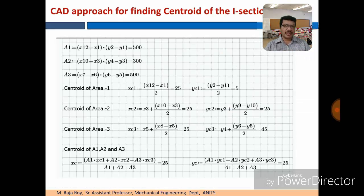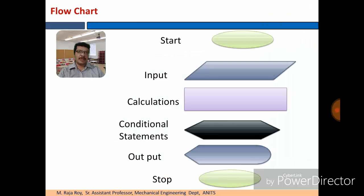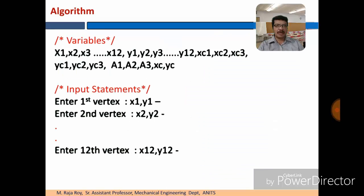You can get the overall centroid as shown here. In CAD approach for design problems, the first step is the standard design procedure. Second step is drawing flowchart. To draw the flowchart, these are the various symbols we have to use. Start symbol is an elliptical oval shape. Parallelogram represents the input statements. Rectangle for calculations and conditional statements and output statements are as shown there.